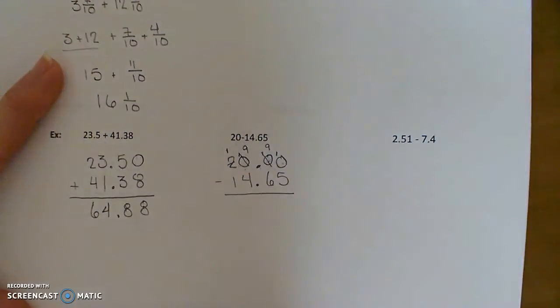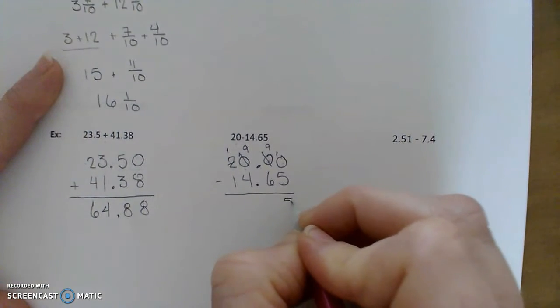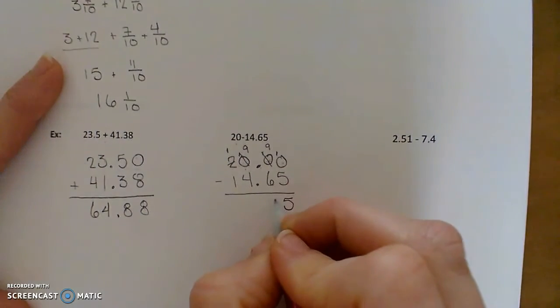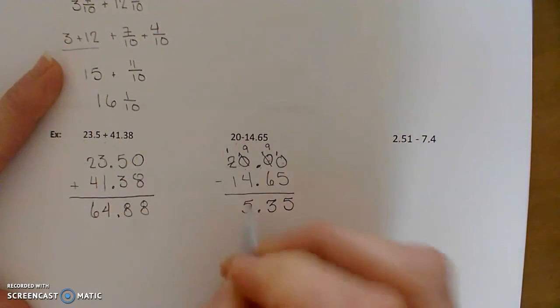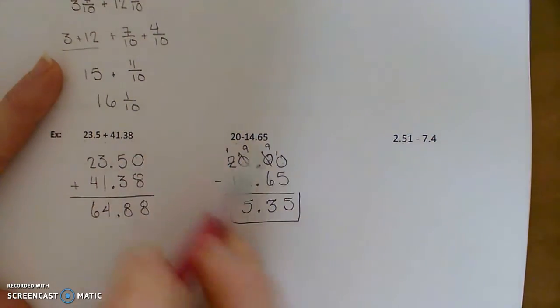All right. 10 minus 5 is 5, 9 minus 6 is 3, 9 minus 4 is 5. So we get 5 and 35 hundredths, which should make sense because this is 20 minus approximately 15.